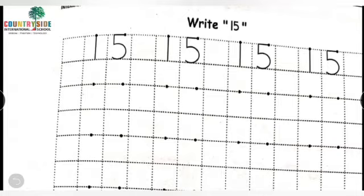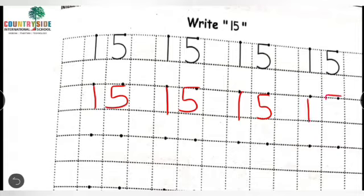So kids, what we are going to do here? We are going to write it independently. So write 1 and make 5. Yes. Write 1 and make 5. Number 15. Write 1 and make 5. Number 15. Speak and write. Speak and write. Number 15. Speak and write. Number 15. Yes. Number 15. 15. 15. I hope you all are doing with me. Yes. Very good kids. Okay.